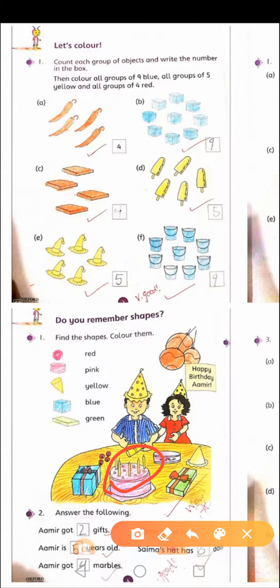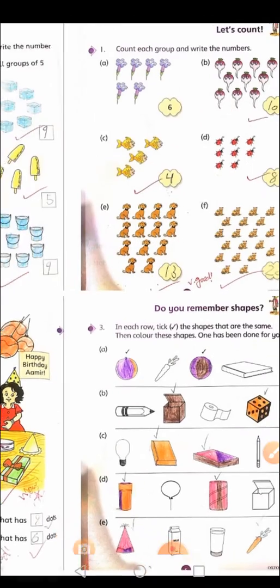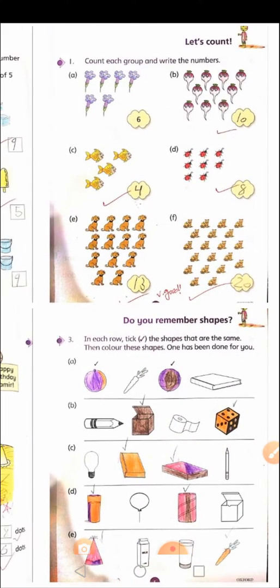The candles on the cake: one, two, three, four, five. Because there are five candles, this shows Amir is five years old. Here is page number six. On this page they ask: in each row, circle the shapes that are the same, then color these shapes.